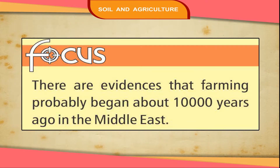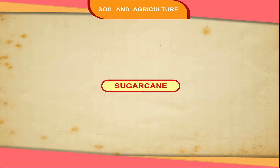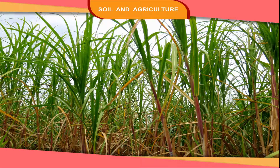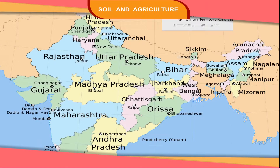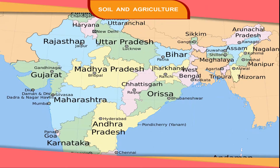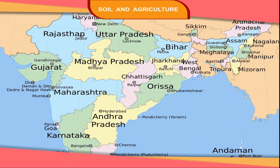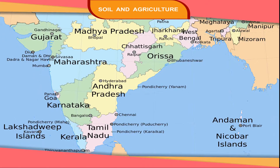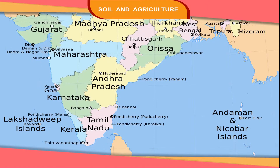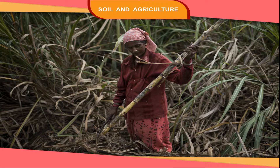There are evidences that farming probably began about 10,000 years ago in the Middle East. Sugarcane is used to make jaggery and sugar. Its producer states are Uttar Pradesh, Bihar, Punjab, Haryana, Karnataka, Maharashtra and Tamil Nadu. India is the leading producer of sugarcane in the world.